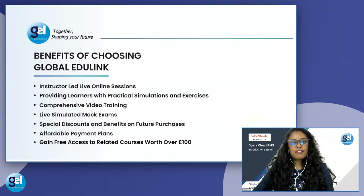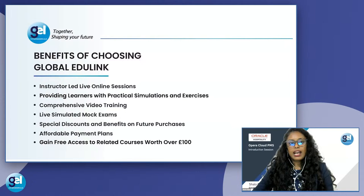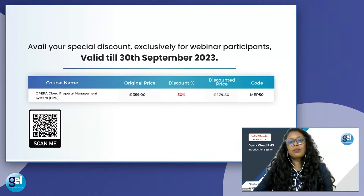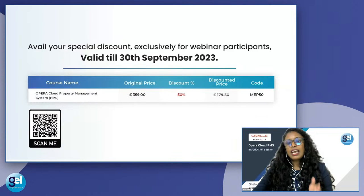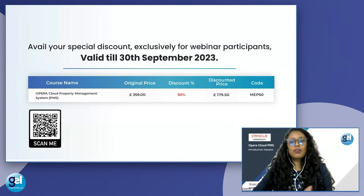Someone has asked whether we can share the recording of this webinar — absolutely, this will be available. At the end of the session we will share discount information and links to the recordings. The original price of the course is £359, which includes 12 months access with all exams, tests, certification, and three months access to the software. As a special discount for September and for all participants today, you can use the coupon code MEP50, bringing the course fee down to £179 — a 50% discount.